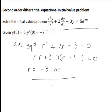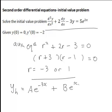These roots of the auxiliary equation determine yh, the complementary function, which is the solution of the associated homogeneous DE. In this case we have two real distinct roots, so the form of the complementary function yh is an arbitrary constant a times e to the negative 3x plus another arbitrary constant b times e to the x.